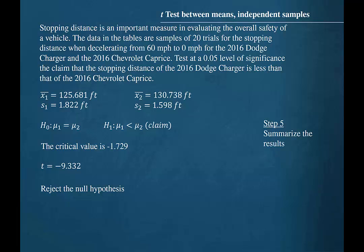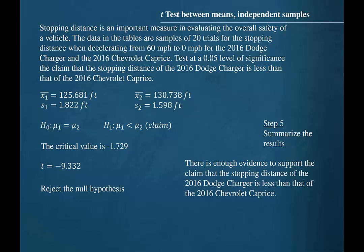Step 5 is to summarize the results. Since we decided to reject the null hypothesis, our conclusion is that there is enough evidence to support the claim that the stopping distance of the 2016 Dodge Charger is less than that of the 2016 Chevrolet Caprice.